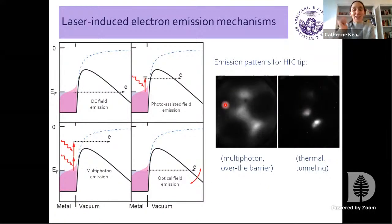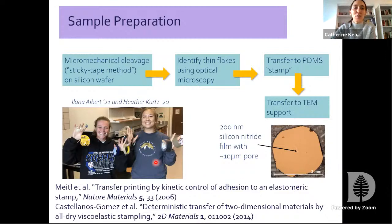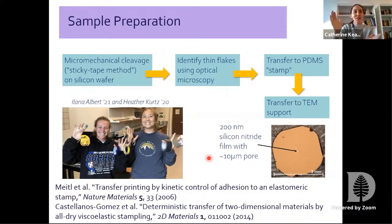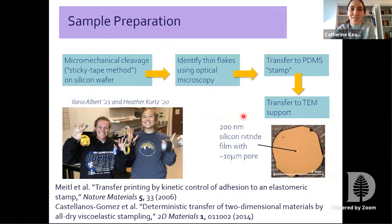Changing gears: we talked about lasers, electron sources. Heather worked on tip fabrication but also on sample preparation, and Alana is a current thesis student continuing Heather's project. We want to study 2D materials and had no background with them before, so we had to learn. Obviously there are many groups preparing 2D materials for various types of experiments. We're using the famous sticky tape method to pull apart the layers of graphite or other materials and hopefully make thin flakes — this seems to be a trial and error process requiring a lot of patience on the part of students.